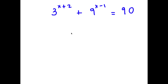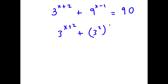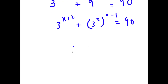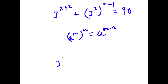In this problem I have 3 to the power of x plus 2, plus 9 to the power of x minus 1, is equal to 90. To solve this, I'm going to first start by rewriting 9 as 3 to the power of 2. So now I have 3 to the power of x plus 2 plus 3 to the power of 2 to the power of x minus 1 is equal to 90. If I have something in the form a to the power of m to the power of n, this is equal to a to the power of m times n, so this is going to be 2 times x minus 1, which is 2x minus 2.